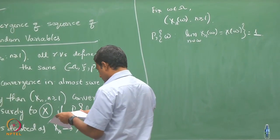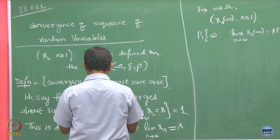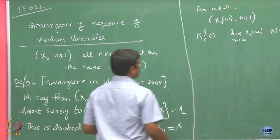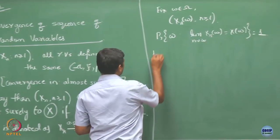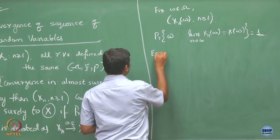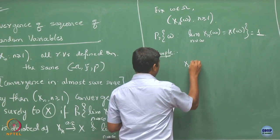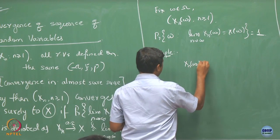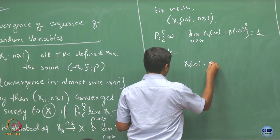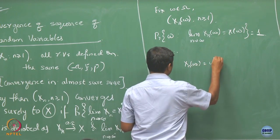If this happens, then we call x_n converges to x almost surely. Let us look at an example. Let us define a sequence of random variables as follows.